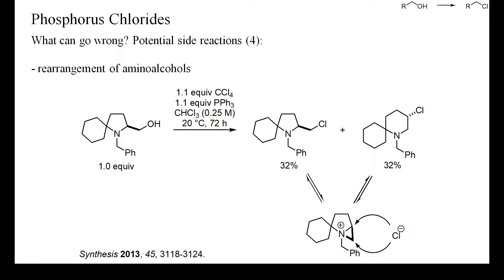When 2-hydroxymethylpyrrolidines are converted to the corresponding chlorides under neutral or basic conditions, piperidines are often obtained as by-products. These are formed via an intermediate aziridinium chloride, which can be ring-opened by chloride in two different ways. This ring expansion of 2-hydroxymethylpyrrolidines is not limited to activation by phosphorus derivatives, but may always occur when the hydroxyl group is transformed into a leaving group under neutral or basic reaction conditions. Under acidic conditions, however, the tertiary amine will be protonated and not sufficiently nucleophilic to bring about this ring expansion.